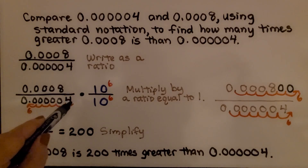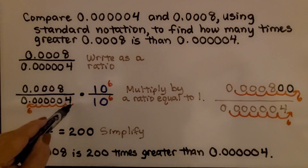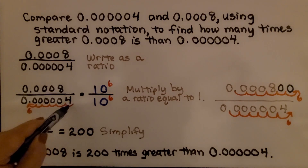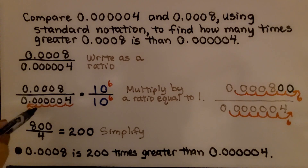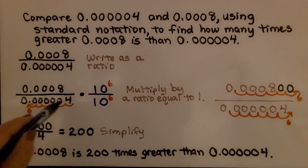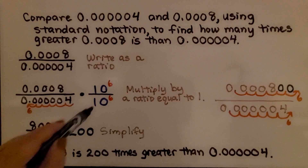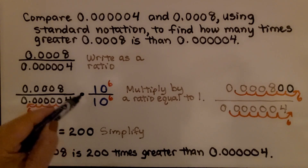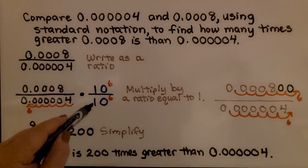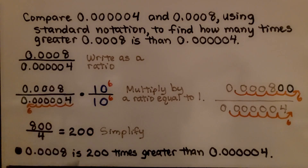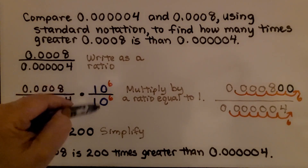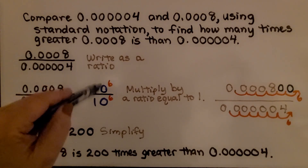We multiply by a ratio equal to 1. We count 6 hops on the longer number, so we're going to multiply by 10 to the 6th power over 10 to the 6th power. Same numerator and denominator — that's a ratio equal to 1.